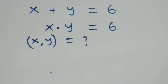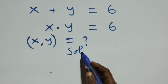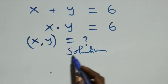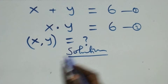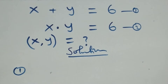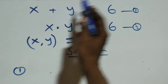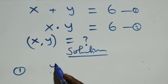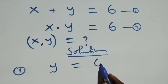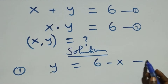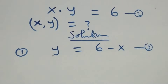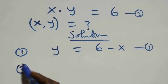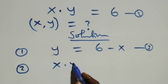Hello, you are welcome. We will solve this algebraic equation. We can label the first equation as equation one and the second as equation two. From equation one, we make y the subject — taking x to the other side — and we get y equals 6 minus x. We label this as equation three.